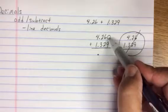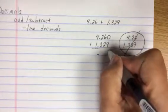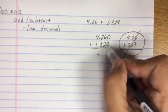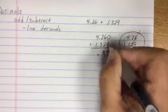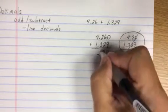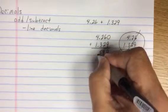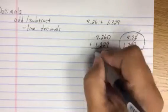So let's add this. 0 plus 9 is 9. 6 plus 2 is 8. 2 plus 3 is 5. My decimals are lined. 4 plus 1 is 5.